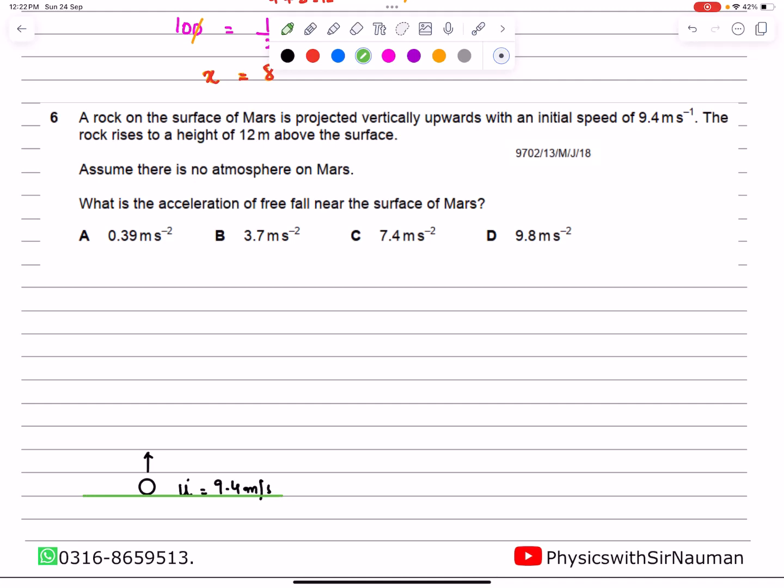The rock reaches a maximum height of 12 meters. At the maximum height, the final velocity becomes zero.